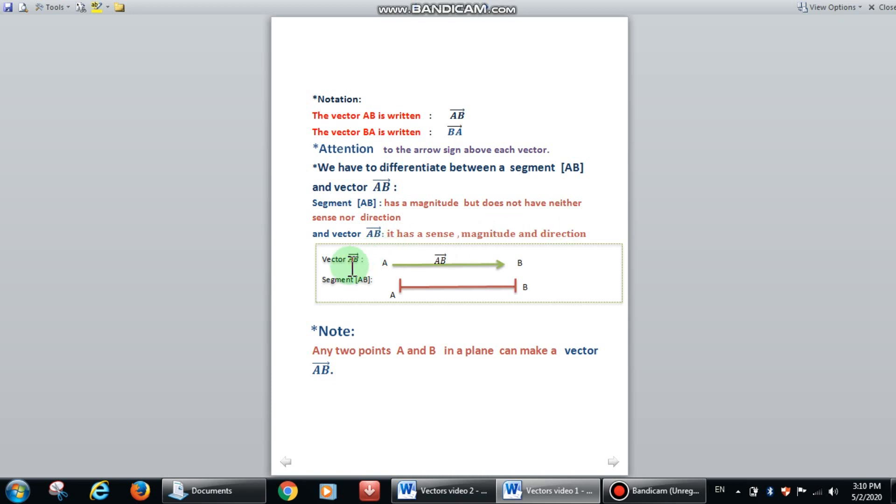We denote vector AB by the following writing: A beginning point, B ending point, and we have to put the arrow. This is A beginning point, B ending point, and this is the arrow on the vector.